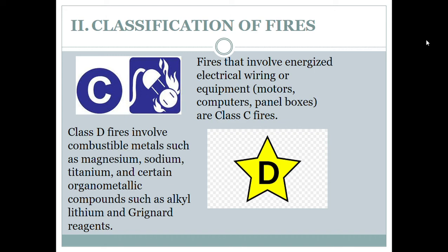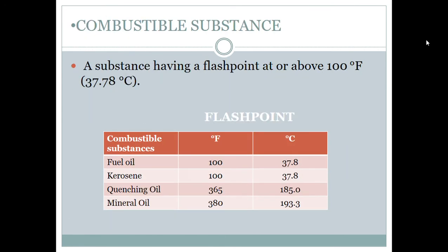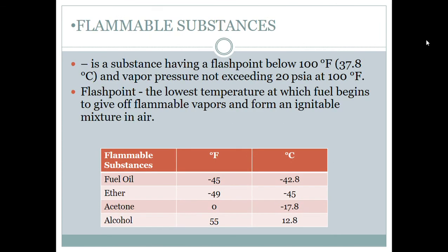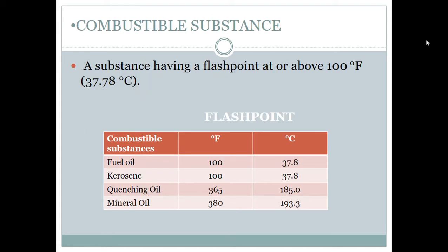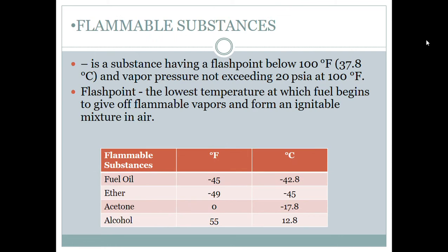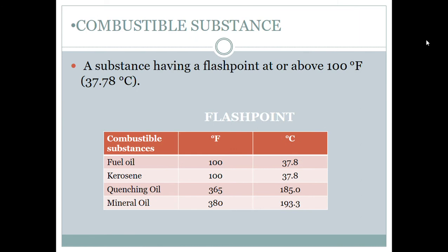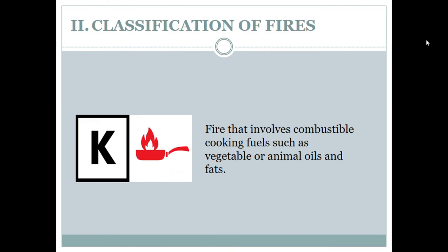Regarding flash points — the more dangerous is having a lower flash point, because it means the substance can more easily light up and catch fire. Class D fires involve combustible metals such as magnesium, sodium, titanium, and certain organometallic compounds such as alkyl lithium and Grignard reagents. Class K fires involve combustible cooking fuels such as vegetable or animal oils and fats.